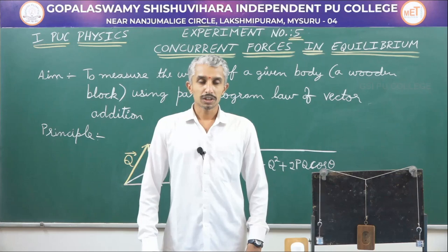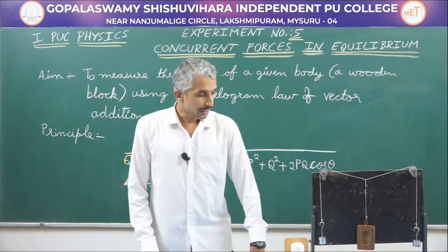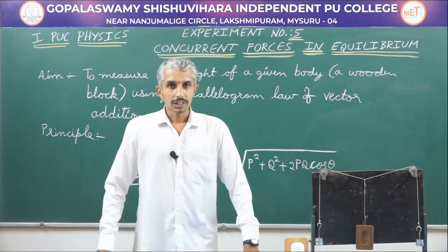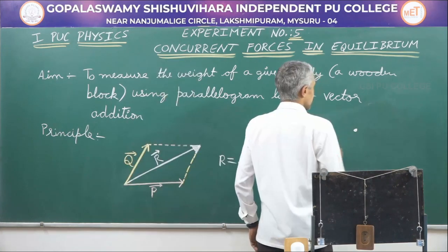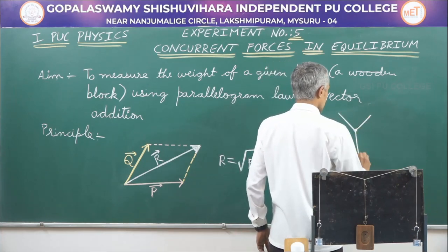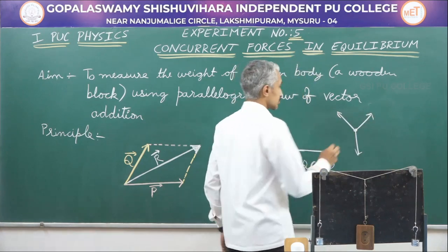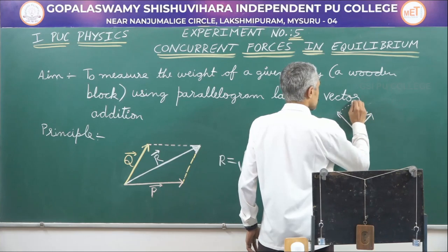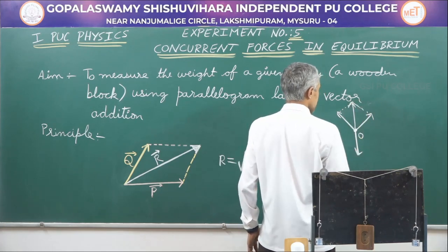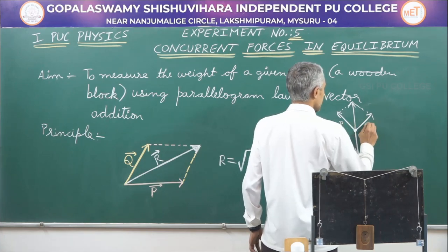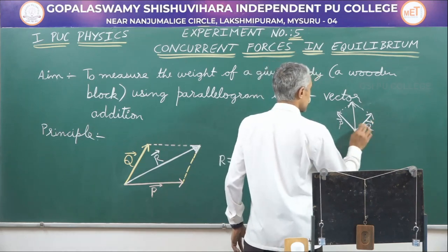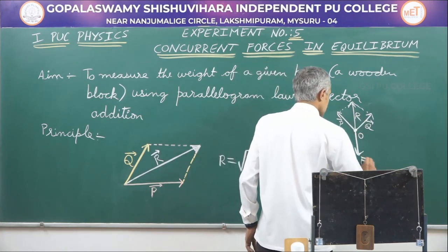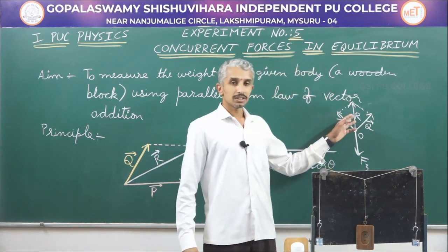We will be making use of the parallelogram law of vector addition to draw a diagram and find the weight of the wooden block. In the laws of motion, we have learnt about equilibrium of an object: if at a point O, three forces act simultaneously, the point is in equilibrium when the third force is equivalent to the resultant of forces P and Q. The resultant R of P and Q is given by the parallelogram law, and the third force must be equal and opposite to R.